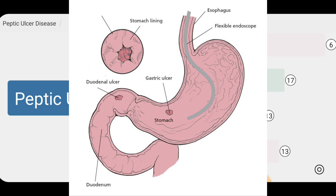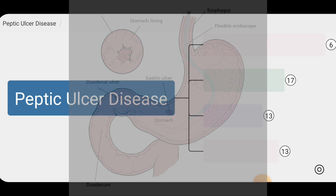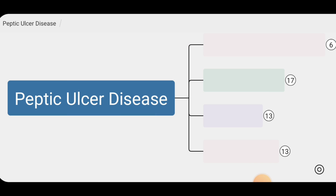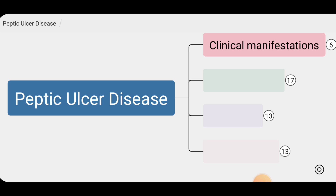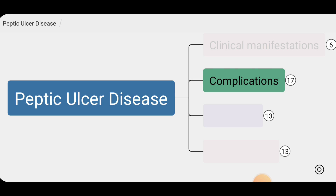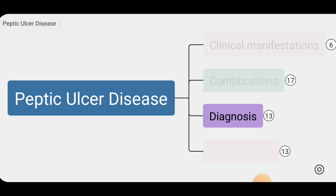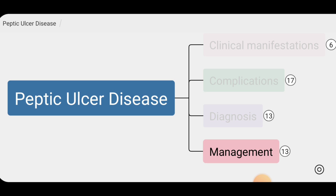Peptic ulcers can be asymptomatic, but can also lead to a range of complications including bleeding, obstruction, perforation, and even cancer. Today we will discuss the clinical manifestations, complications, diagnosis, and management of peptic ulcer disease.